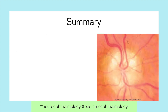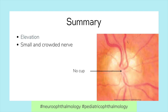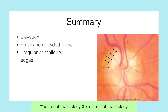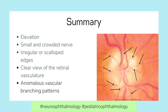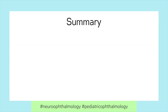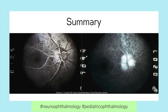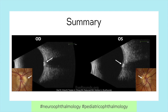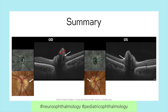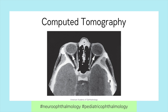Five clinical features of Optic Disc Drusen include elevation, small and crowded nerve, irregular or scalloped edges, clear view of the retinovasculature, and anomalous vascular branching patterns. The four ancillary tests helpful in differentiating Optic Disc Drusen from true optic nerve edema are autofluorescence, fluorescein angiography, B-scan ultrasonography, and OCT. CT is not typically used to diagnose Optic Disc Drusen, but calcified drusen may be visible at the optic nerve head.